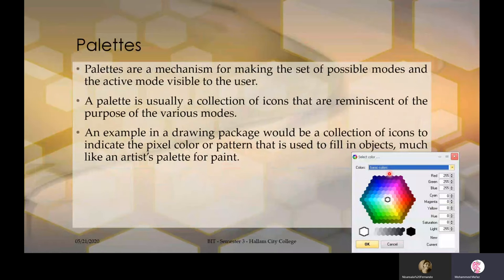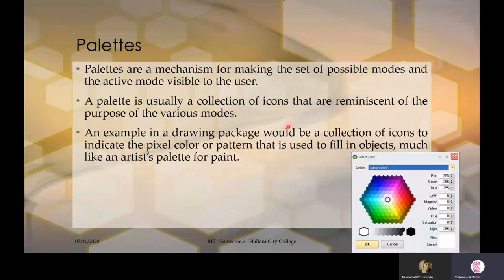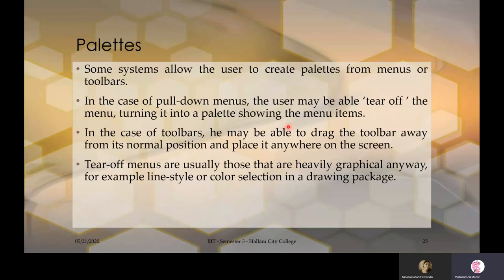Palettes are a mechanism for making the set of possible modes and the active mode visible to the user. A palette is usually a collection of icons reminiscent of the purpose of various modes. In a drawing package, a palette might be a collection of icons indicating the pixel color or pattern used to fill objects — much like an artist's palette for paint. When you select a particular color, there is an indication showing the user which color is currently selected. Without this visual indicator, it would be very difficult for the user to know which one was clicked.